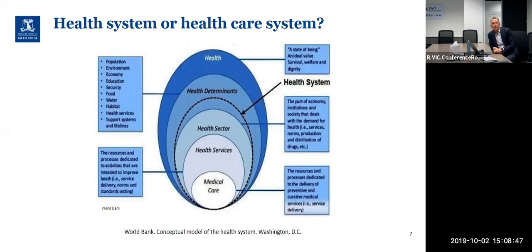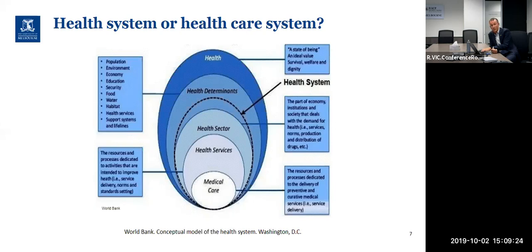I really like this model on slide seven showing the World Bank's conceptual model of the health system. The salient point is that medical care and health services are down the bottom of this oval-shaped model, and the health system as defined by the World Bank is much bigger than that. Social determinants of health, which are often far outside the health system, are very relevant determinants of health — and this really matters in terms of what health economics is focused on.